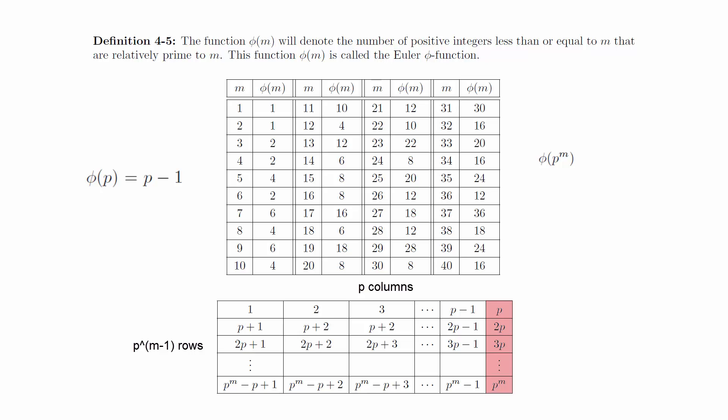The only numbers that are not relatively prime to p to the m are the multiples of p, which are the numbers contained in the rightmost column. This means all the other numbers are relatively prime to p to the m.